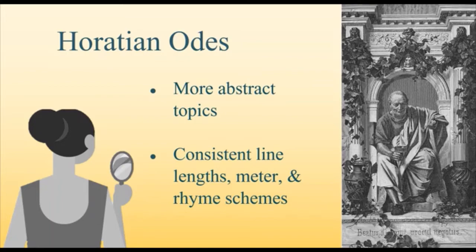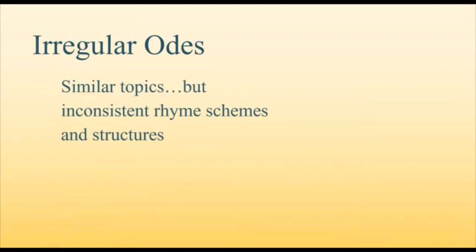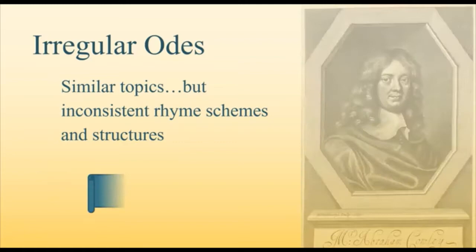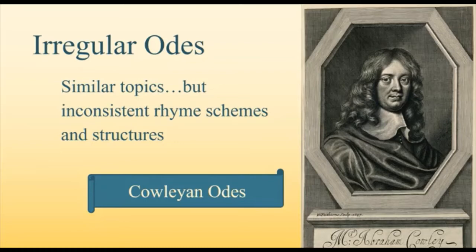The irregular odes are the wildcard category. This is how we classify odes that have a tone and subject similar to those of the Pindaric and Horatian odes, but these odes lack a consistent rhyme scheme and structure. Sometimes these odes are called Cowleyan odes after the poet Abraham Cowley. Cowley famously attempted to write in the style of the Pindaric ode, but he misunderstood Pindar's metrical structure and accidentally created the English Pindaric ode.